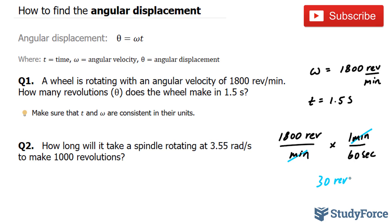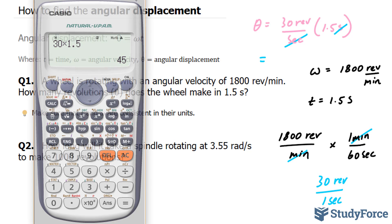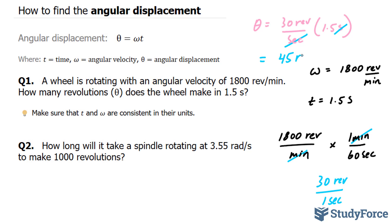30 revs per second. Now that the angular velocity and time are consistent, we can multiply the two. Where we have theta is equal to 30 revs per second times the time of 1.5 seconds. This cancels out. 30 times 1.5, we'll use our calculator, gives us 45. 45 revolutions.